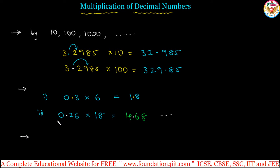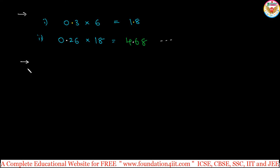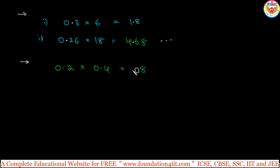One more category: any decimal number multiplied with another decimal number. For example, 0.2 multiplied by 0.4. Without considering the decimal points, this is 2 times 4, which equals 8. Now count the total decimal places: 1 from 0.2 and 1 from 0.4 — total 2 decimal places. From the right side, we need 2 decimal places, but only 8 is there, so put one more zero and place the point: 0.08.